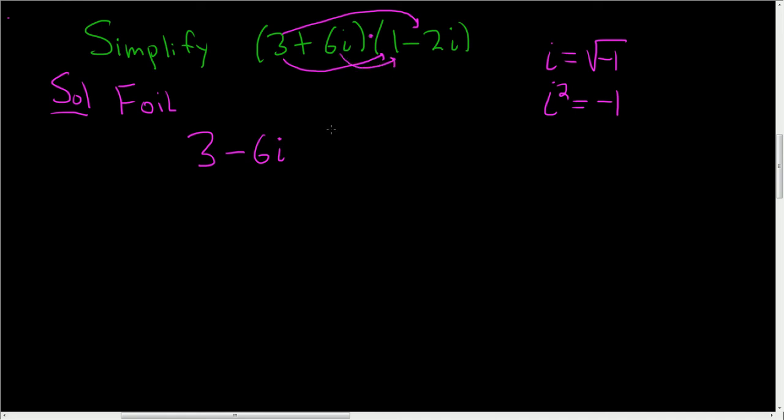Inside, so we get 6i. Wow, looks like they're going to end up canceling. It's a coincidence. And actually, it's not a coincidence. And then we end up with minus 12i squared.